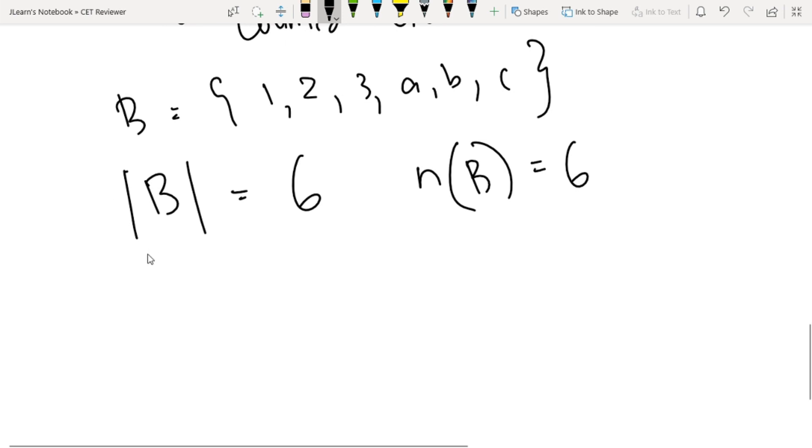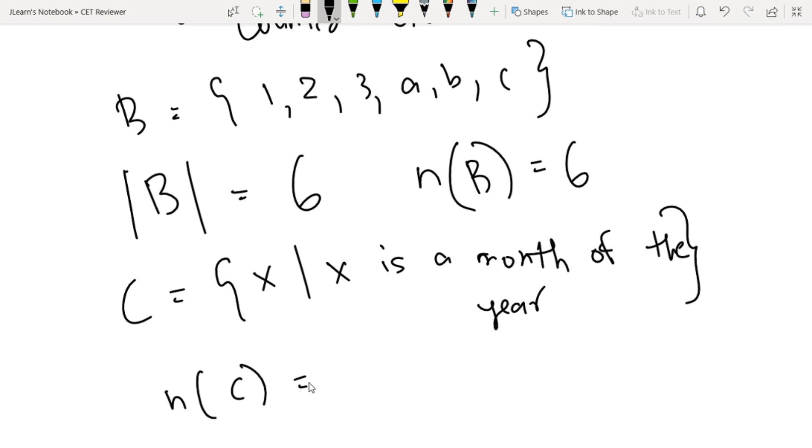Just some examples. Let's use set builder: C equals x such that x is a month of the year. What's the cardinality of C? You have January until December, so that is 12.